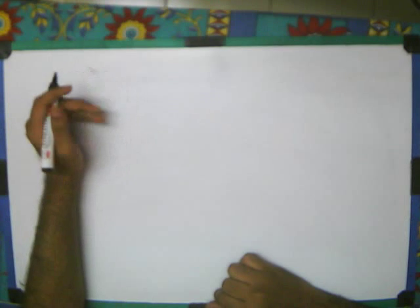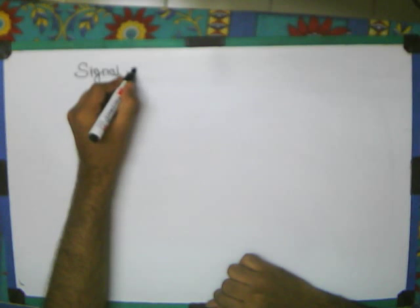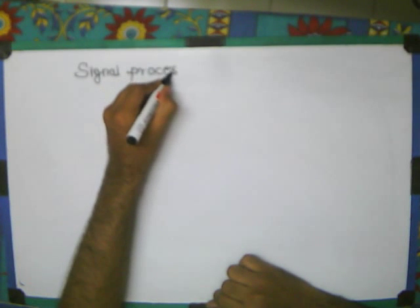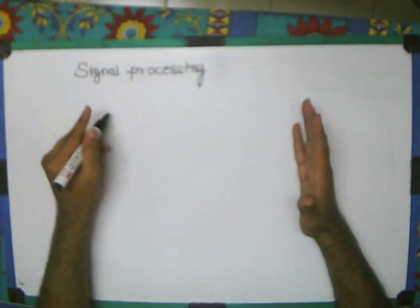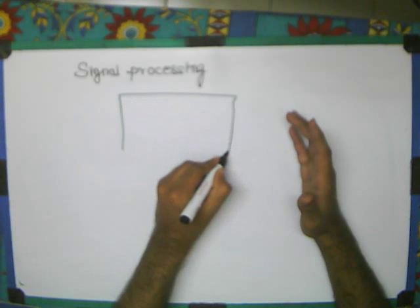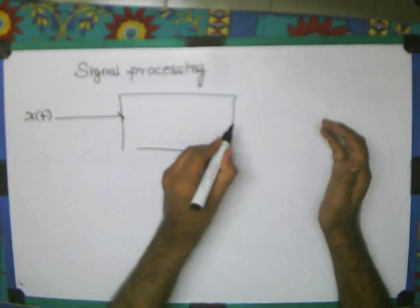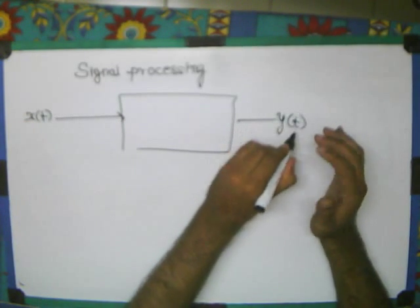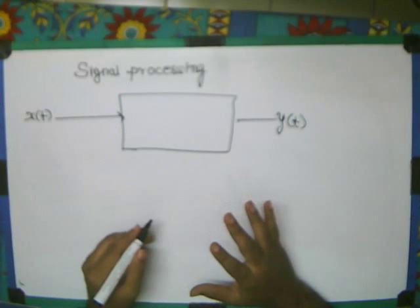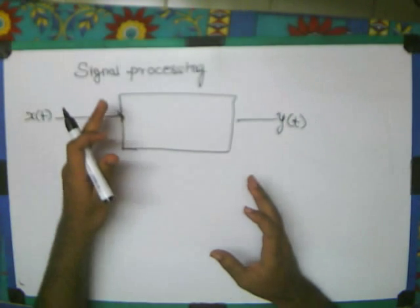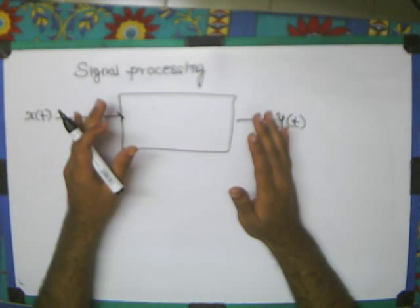If we look at what a signal processing paradigm is: in signal processing, what actually happens is that we have some input and we have some output, and we do some sort of manipulation and processing in the middle. In this lecture series, we are going to analyze how actually we can have different representations of filters.